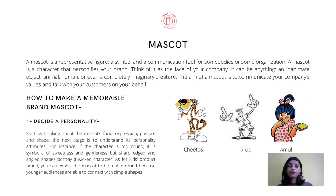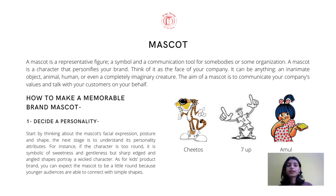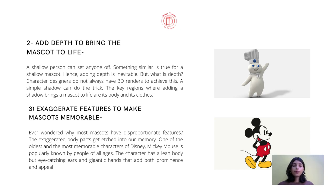For example, if you are making something for a kid's brand, you will definitely use simpler shapes like circles, because kids would not relate to very complicated shapes — simpler shapes will resonate with them more. One thing to note: your mascot can be anything — it can be a plant, an animal, or any object. But what you should keep in mind is that it should resonate with the personality of your brand.